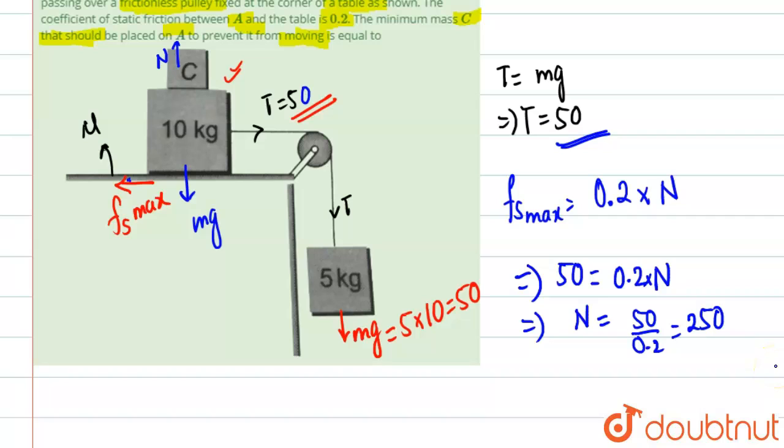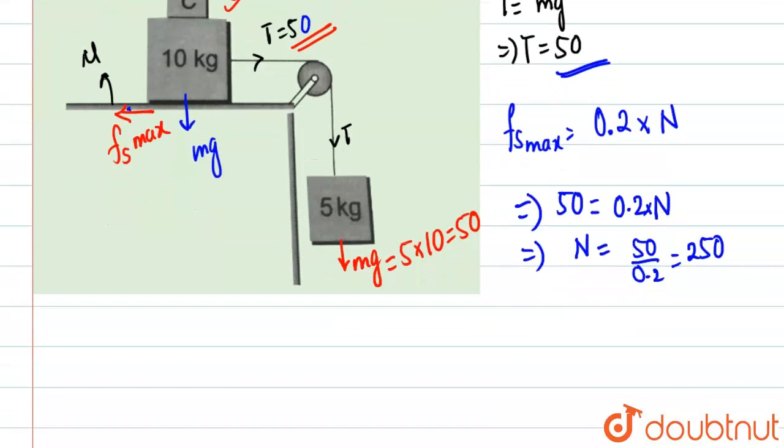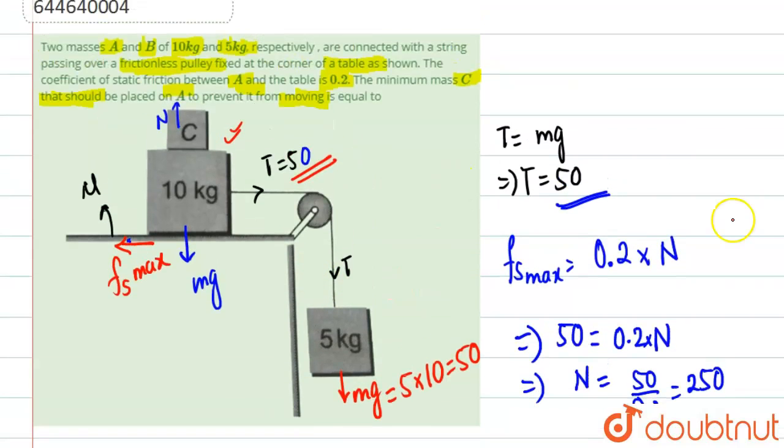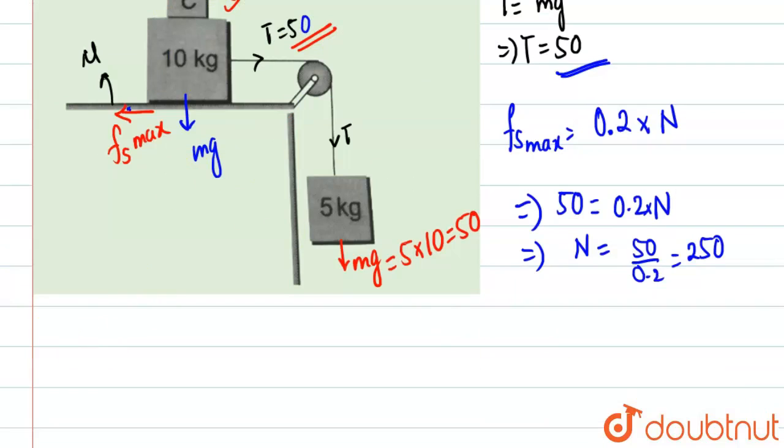This friction force will be equal to N. So N is basically equal to Mg. M is basically this 10 plus mass of C into g. Now we're going to put this equal to 250 from equation number 1.